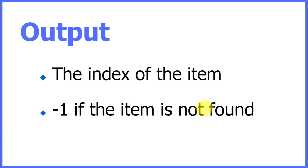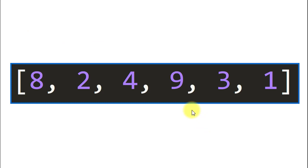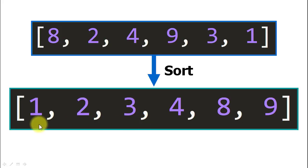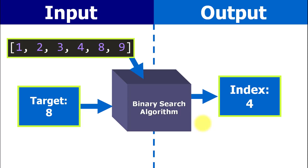It returns as output the index of the item if it was found, and minus one if the item was not found. In this example, we provide the sequence and the target item as inputs, apply the algorithm, and get the index of the element as the output — or minus one if not found.